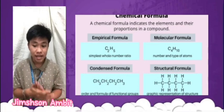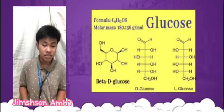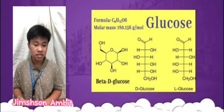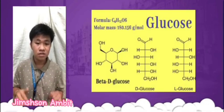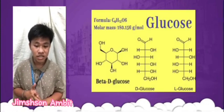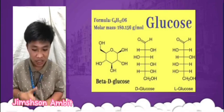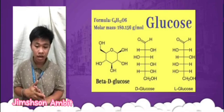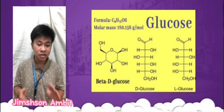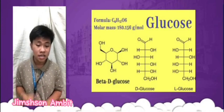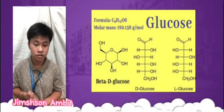For example, the molecular formula for glucose is C6H12O6, which shows that there are 6 carbon atoms, 12 hydrogen atoms, and 6 oxygen atoms in a glucose molecule.